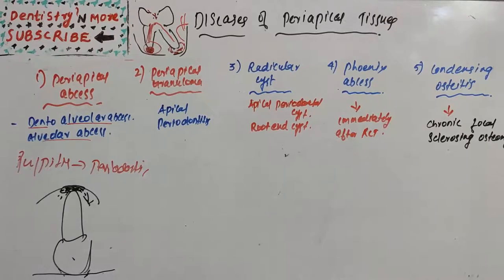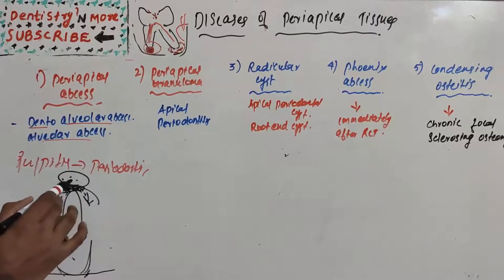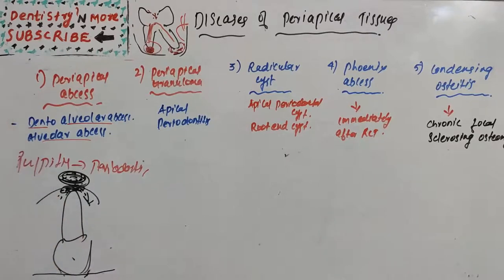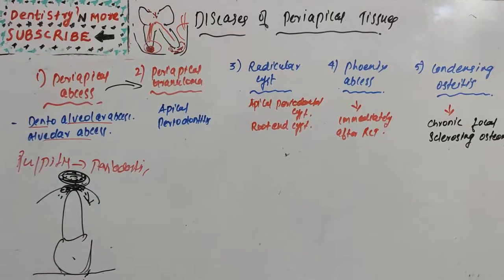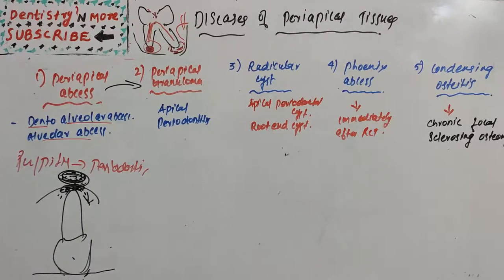Chronic abscess developing in a periapical granuloma: we can see a radiolucent area at the apex. A radiolucent area appears black on radiograph. In such cases, the abscess transitions toward a periapical granuloma, and a radiolucent area will be visible at the apex.